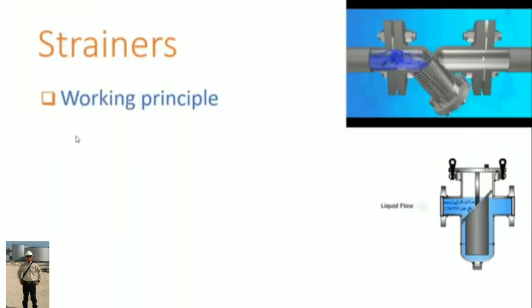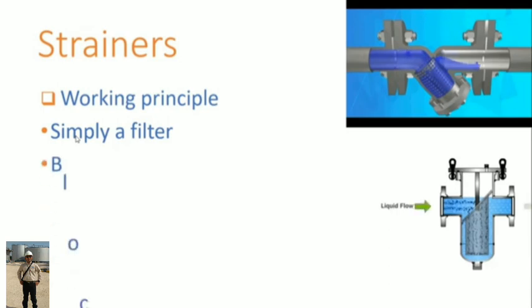Strainers working principle. They are filters used to prevent impurities and debris entering to the flowing path. If the fluid contains impurities, then a strainer must be installed in the pipeline before a pump, and also you can find it in foot valves.